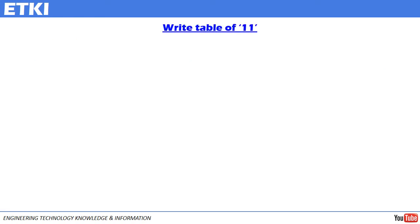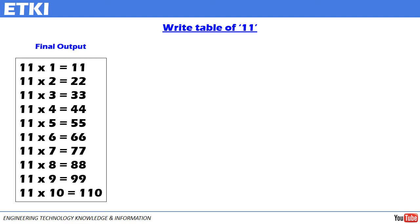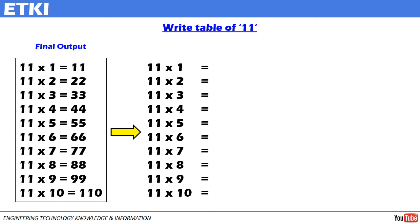Let us start with writing the table of 11. This is the final output wherein we have 11 ones are 11, 11 twos are 22, 11 threes are 33 and so on. In order to get the final output, let us start writing the table. This is the usual and common way of writing the table. Now, instead of writing the answer of table 11, I have separated the number 11 as 1 and 1. One on the left hand side and one on the right hand side. I will write the table of 1 on the left hand side and 1 on the right hand side as it is. 1, 2, 3, 4, 5, 6, 7, 8, 9, 10.